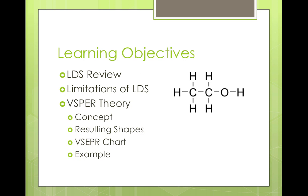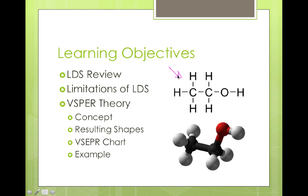At the end of the day, the entire video is really about taking a two-dimensional shape that we get from Lewis dot structures — like this shape for the substance ethanol — and translating it into a three-dimensional representation of what the molecule actually looks like. As valuable as Lewis dot structures are for telling us connectivity in molecules, it's these three-dimensional shapes that really give us insight into the chemical nature of a substance.